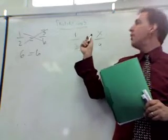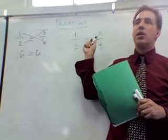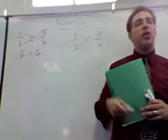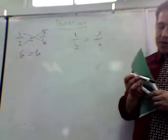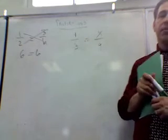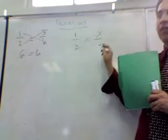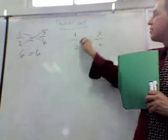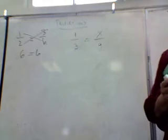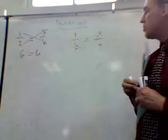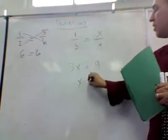Now over here, 1 third equals x over 9. Now in this case, they don't tell you what one of the numbers are. So the easiest way to figure this out, and although this is an easy question, you could do it in your head, the easiest thing to do is just to cross multiply. And again, you can only do this when it's a fraction equals a fraction. That times that and that times that. So you get 9 equals 3x or 3x equals 9, which you then solve. You get x equals 3.